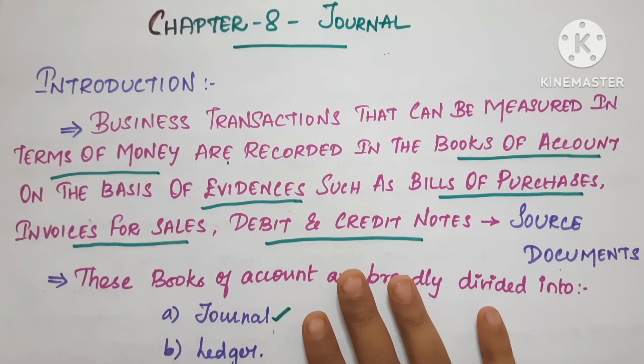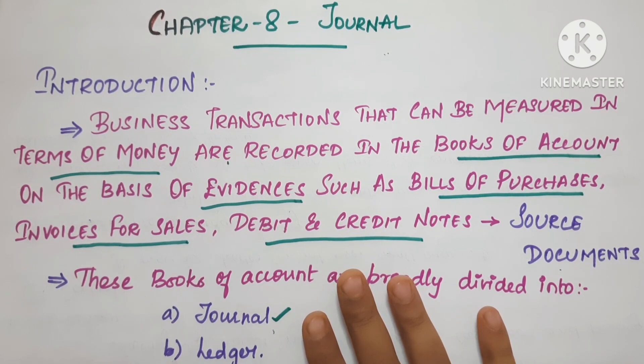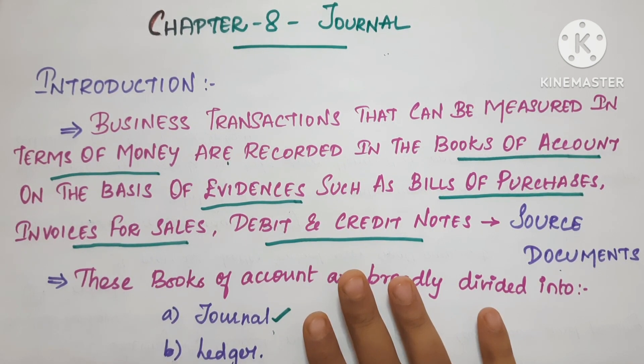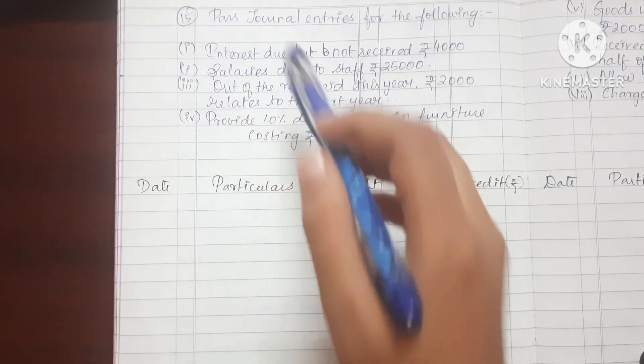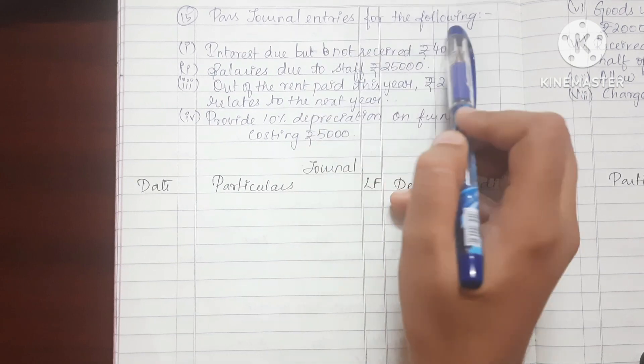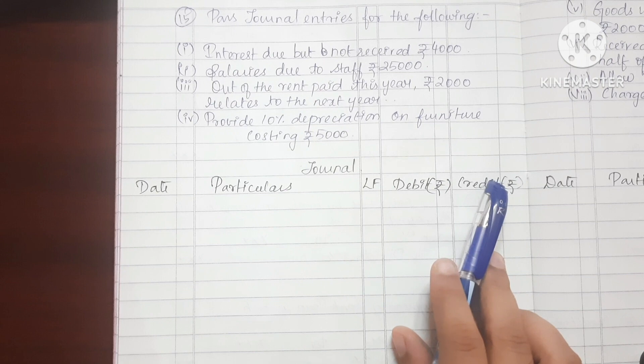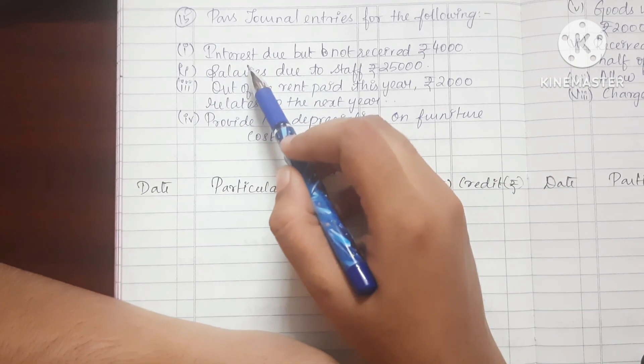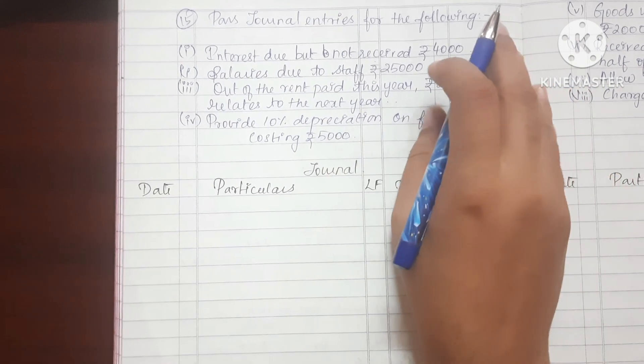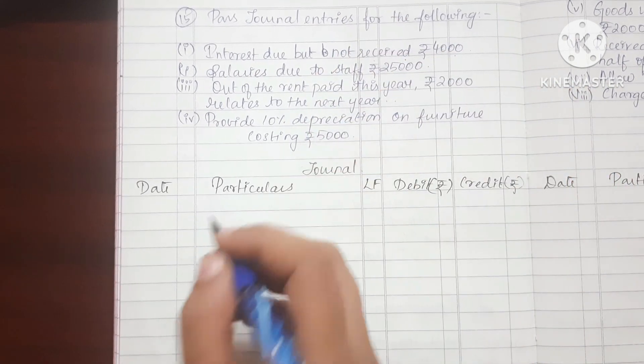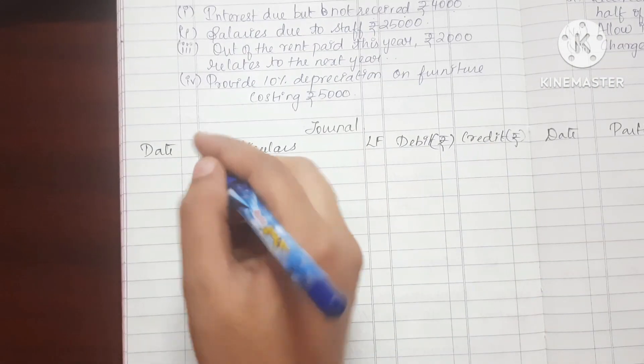In this video, we will be able to see the important topics. We will see one chapter. Pass journal entry for the following. We will see the sub-divisions, the adjustment entries. First sub-division: Interest due but not received Rs.4000. This is accrued income but not yet received. Adjustment entry.